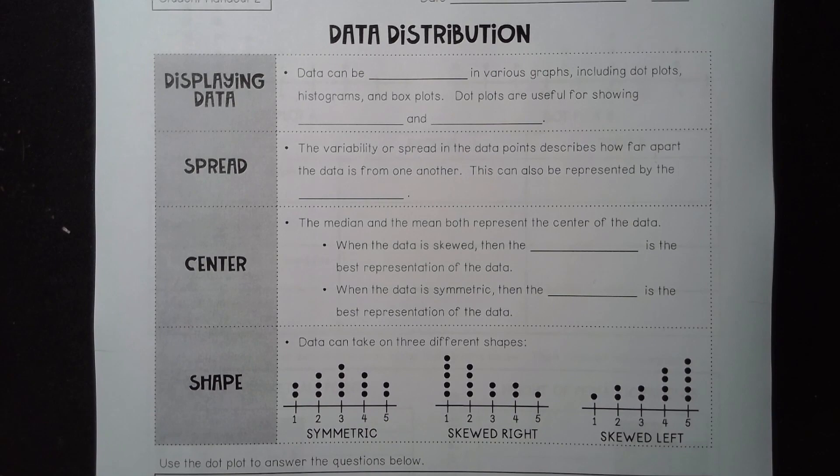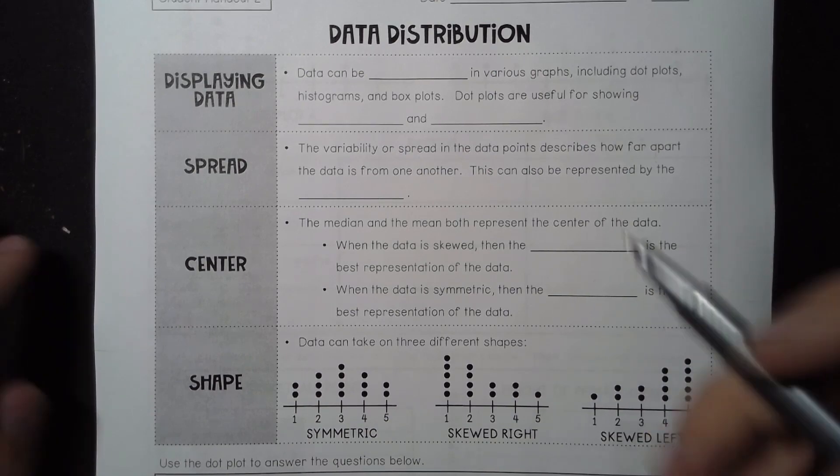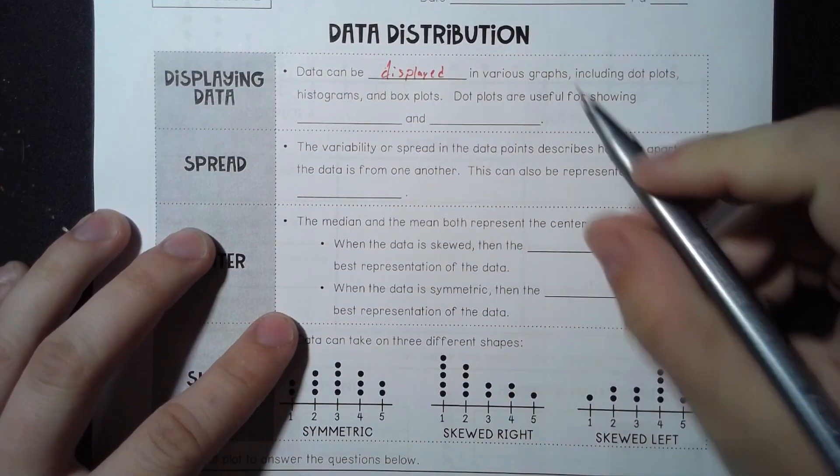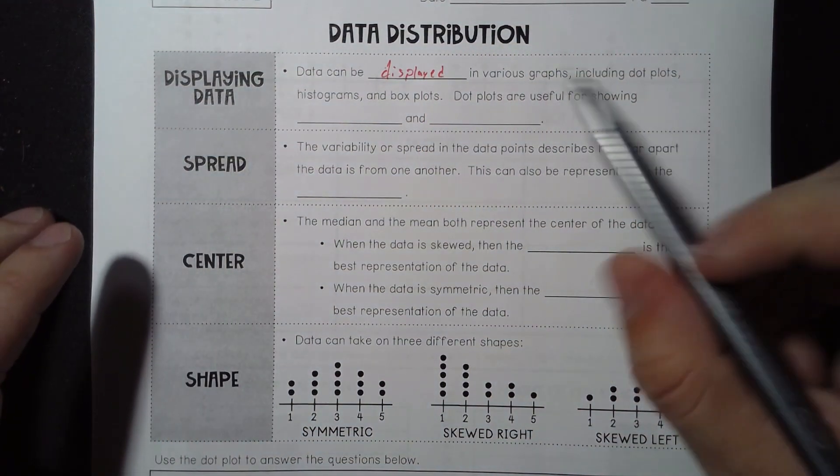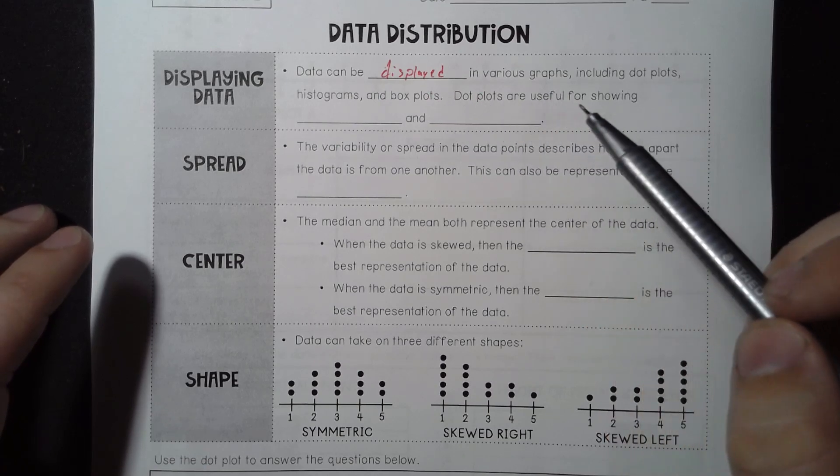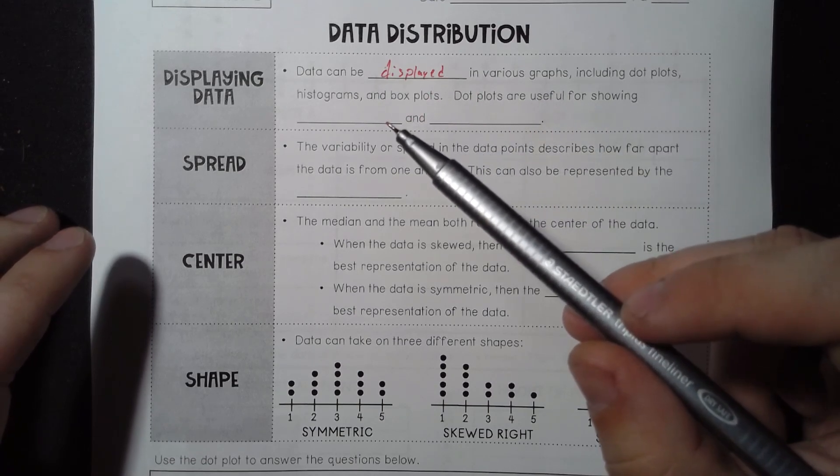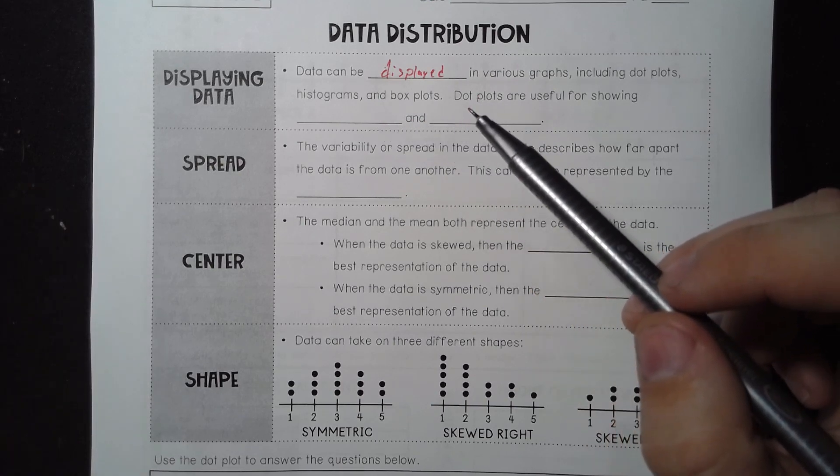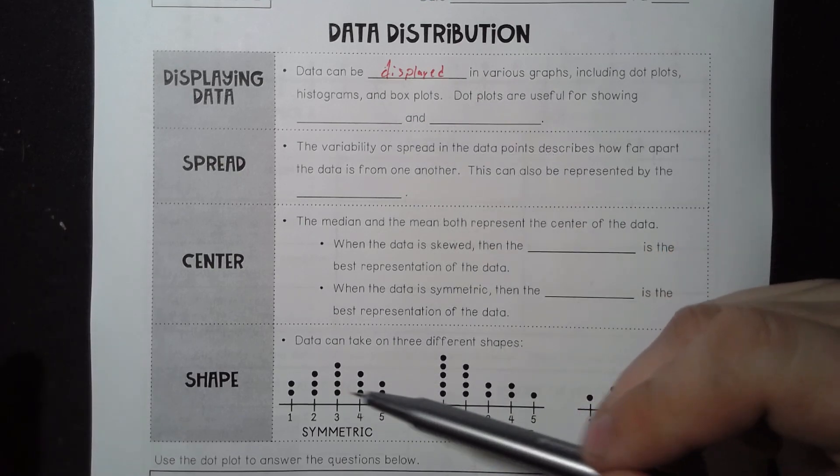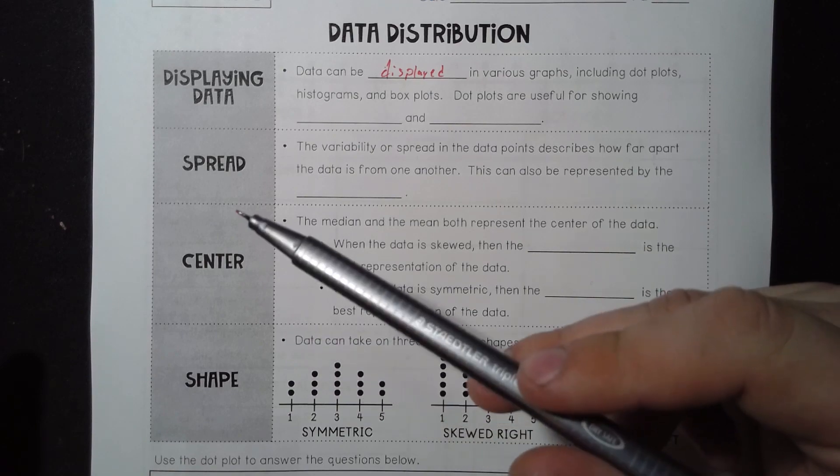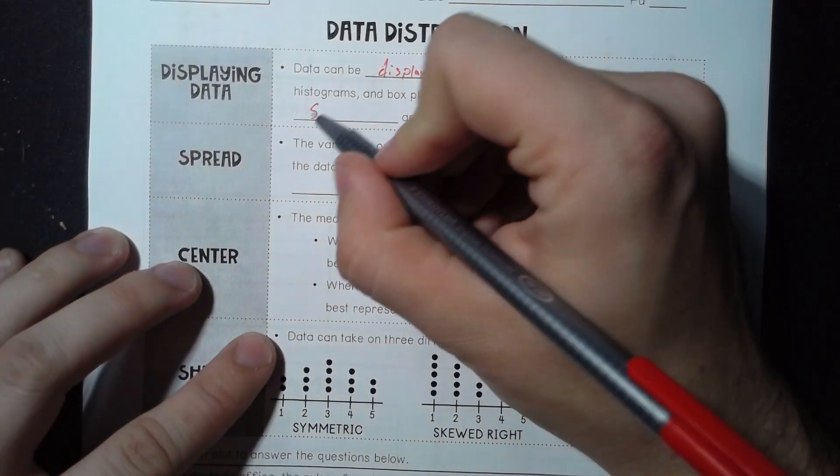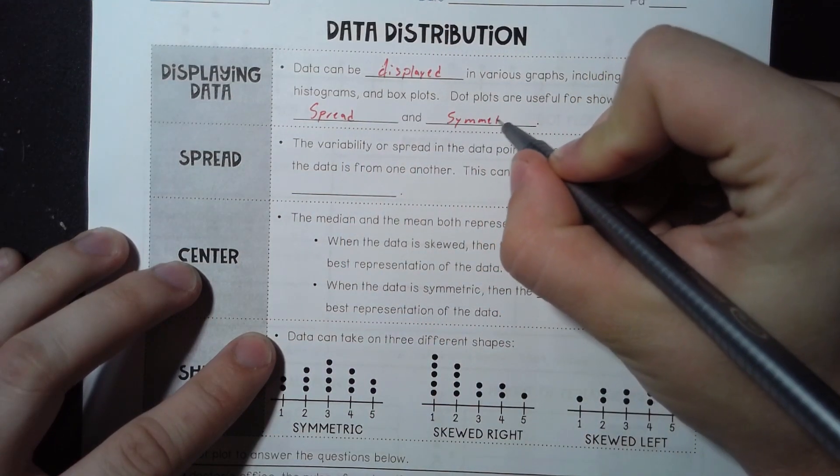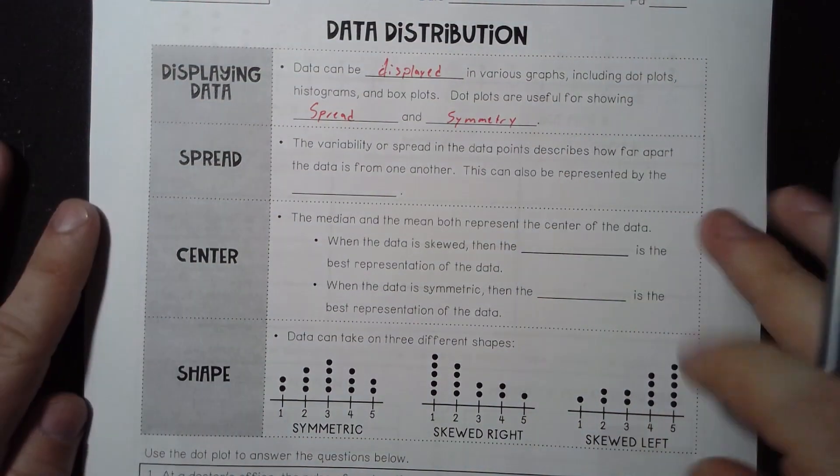Data can be displayed in various graphs, including dot plots, histograms, and box plots. Box plots are useful for showing spread and symmetry. That's what these are really good for.